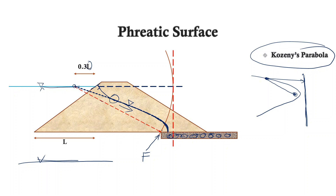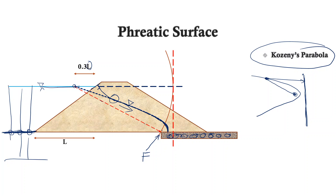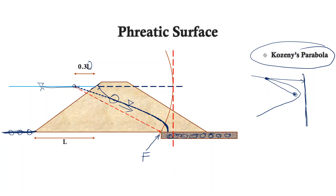Another equipotential line is the river bed or reservoir bed, which we can assume to be fairly horizontal in the upstream. Here also it is an equipotential line because the piezometric head at any point along it is equal. So the direction of flow lines from these points will be perpendicular to these equipotential lines — they will enter the river bed perpendicularly, and in the dam they will enter the upstream slope perpendicularly.